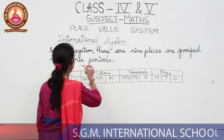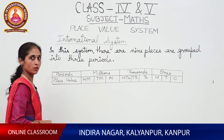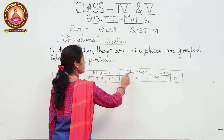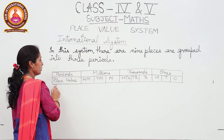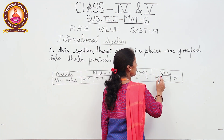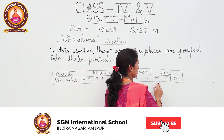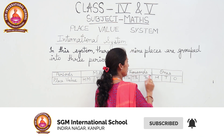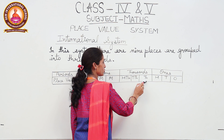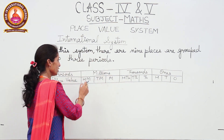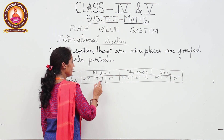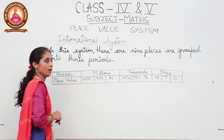Now in the international system, nine places are grouped into three periods: ones, thousands, and millions. The ones period is divided into three places: ones, tens, and hundreds. The thousands period is divided into three places: thousands, ten thousands, and hundred thousands. The millions period is divided into three places: million, ten million, and hundred million.